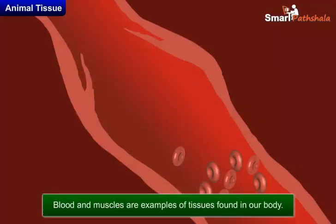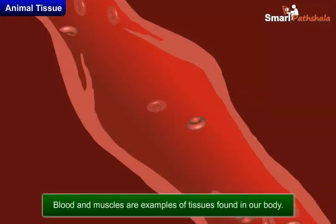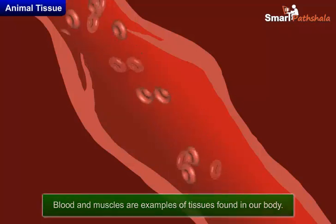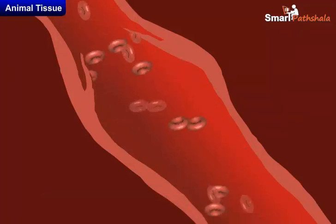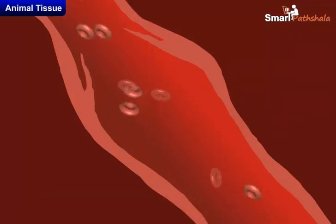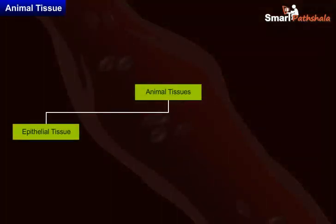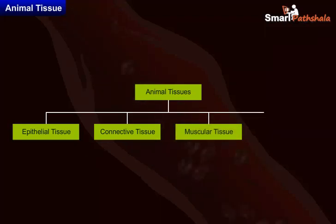Blood and muscles are both examples of tissues found in a body. On the basis of the functions they perform, animal tissues are divided into different forms such as epithelial tissue, connective tissue, muscular tissue, and nervous tissue.